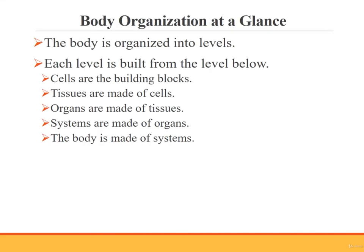The body is organized into levels, with each level being formed by the levels below it. To put it another way, the cells are the building blocks of the body. Cells come together to make tissues, tissues come together to make organs, and organs come together to make systems. The body as a whole is made up of various body systems.